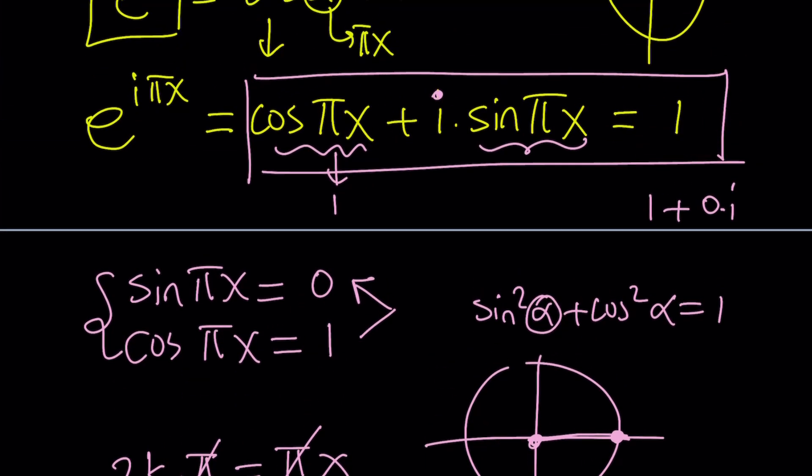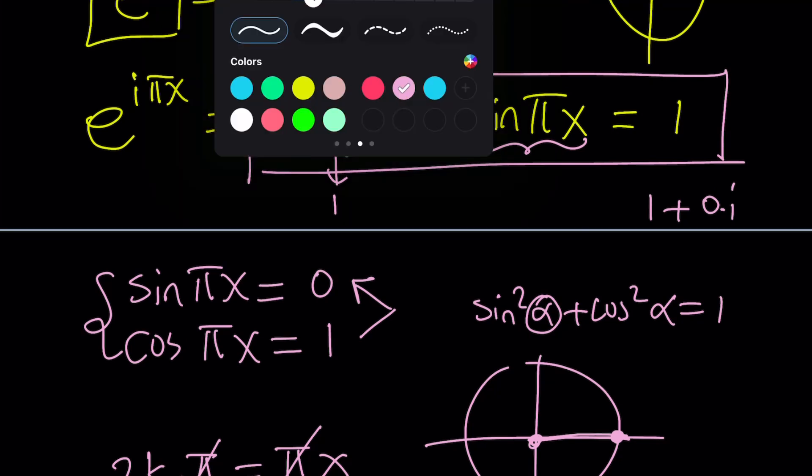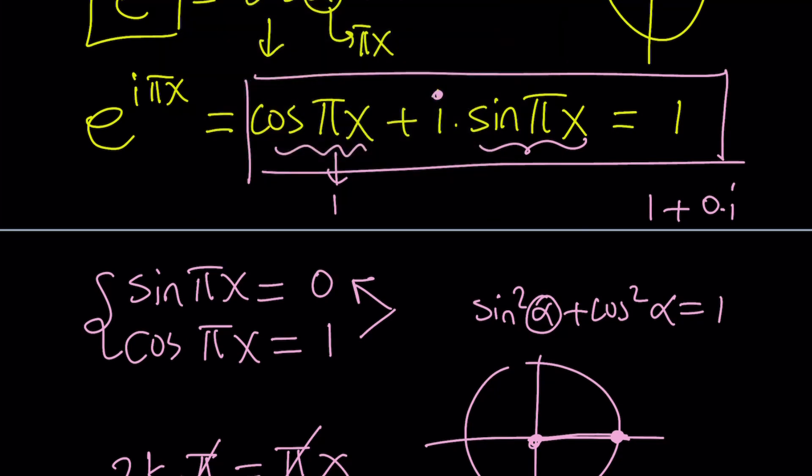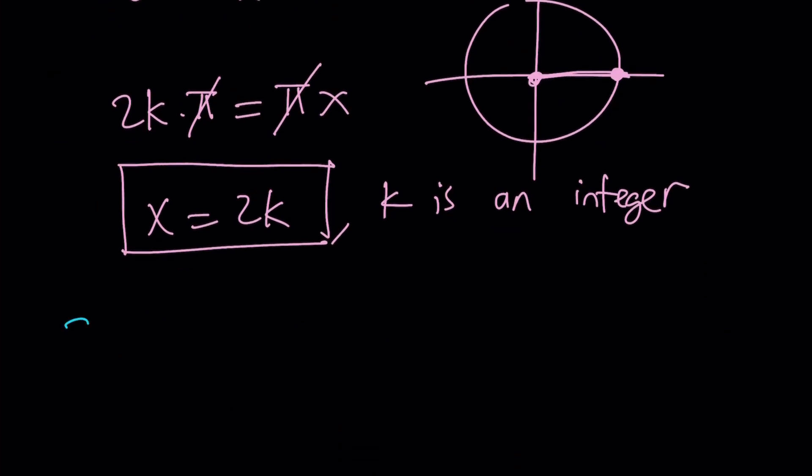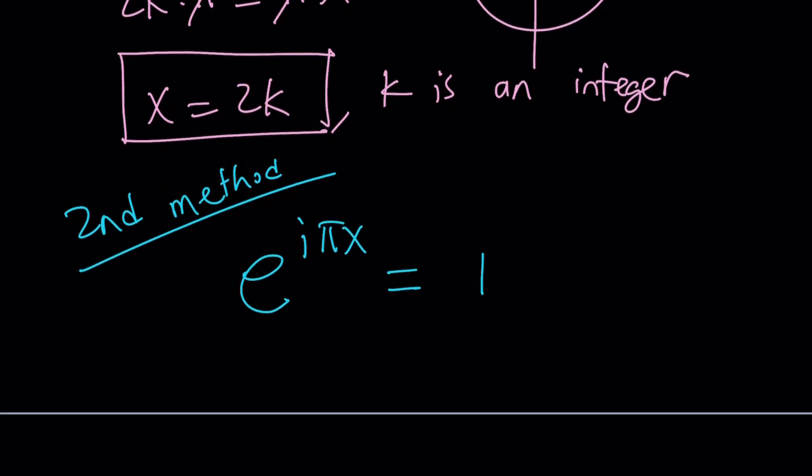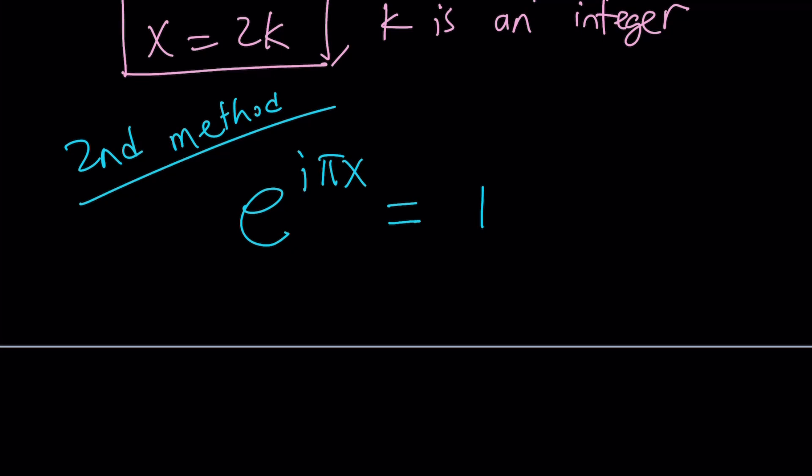Let's go ahead and look at this from another angle. Maybe we could call this one first approach or first method. And then, we're going to talk about the second method. So, our second method, let me rewrite the original problem, e to the power i pi x equals 1.